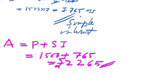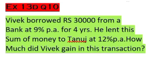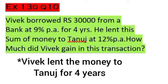Let's try one more sum — Exercise 13D, question 10, NCERT book: Vivek borrowed rupees 30,000 from a bank at 9 percent per annum for four years. He lent this sum of money to Tanuj at 12 percent per annum for the same period. How much did Vivek gain in this transaction?